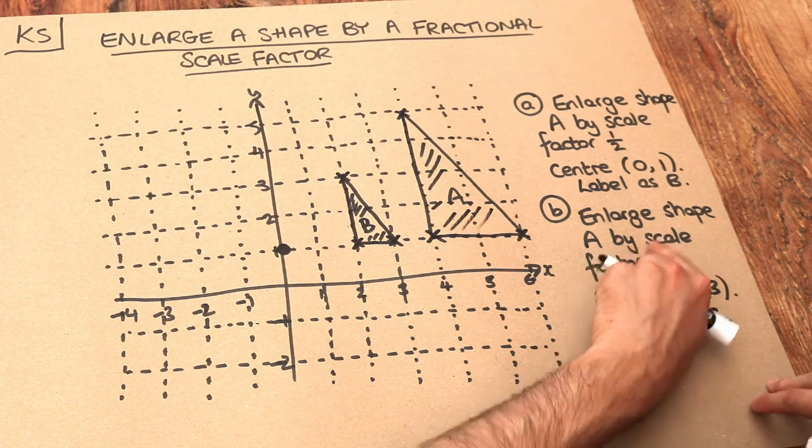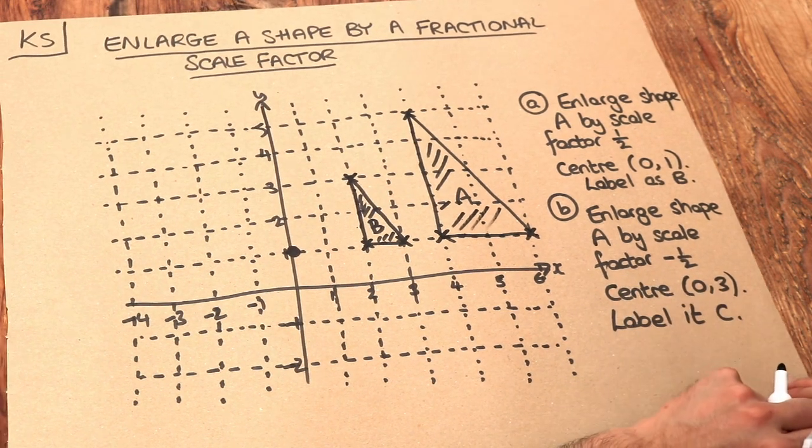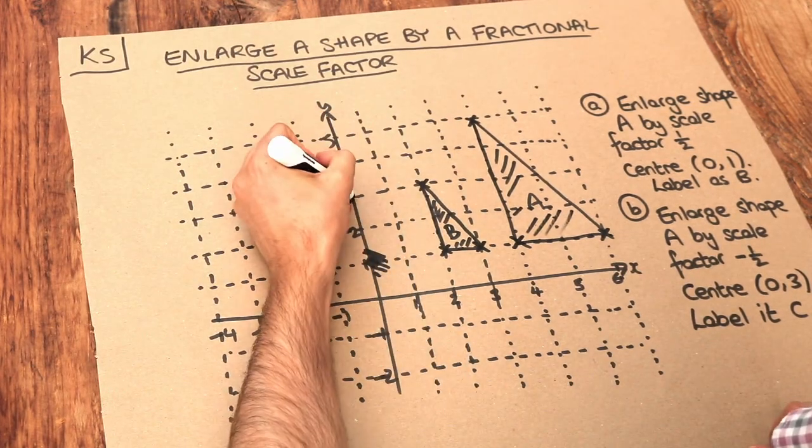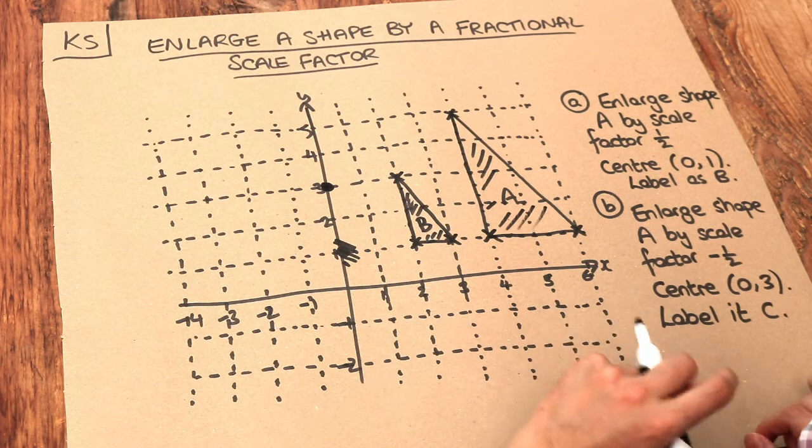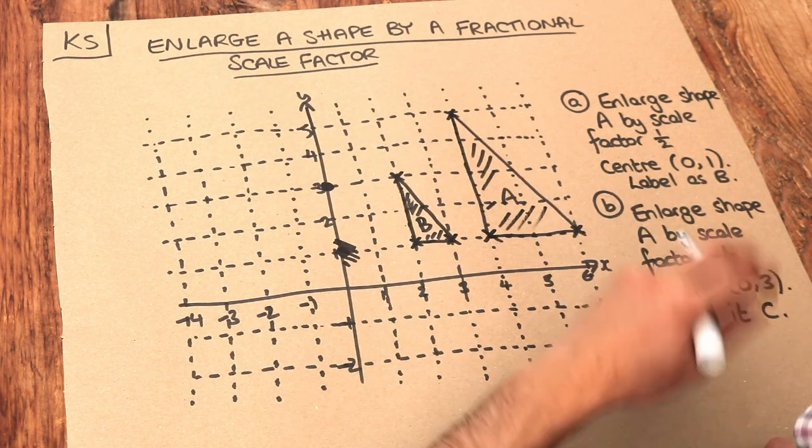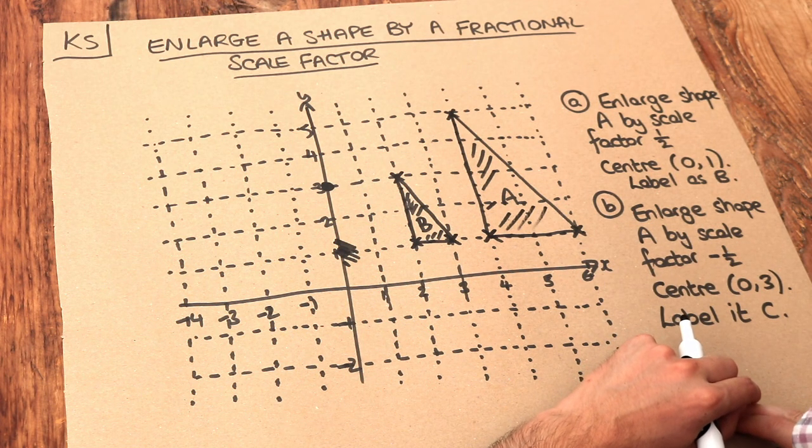What about this second one? Enlarge shape A by a scale factor of negative half, centre (0,3). So now we have a new centre of enlargement at (0,3), which is here. By the way, if you haven't done negative scale factors yet, I have a separate video on it, but I'll cover it here anyway. We'll do the same as before.